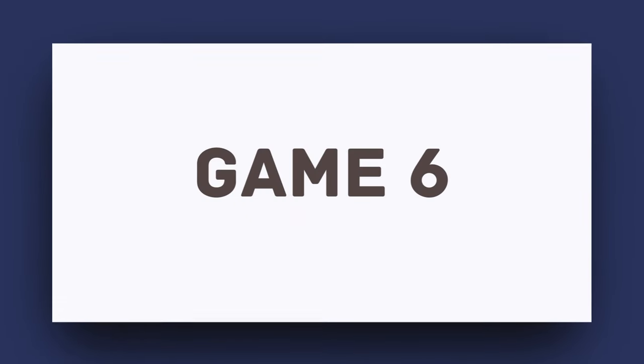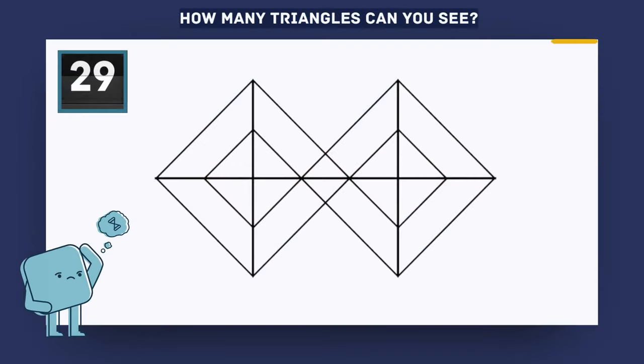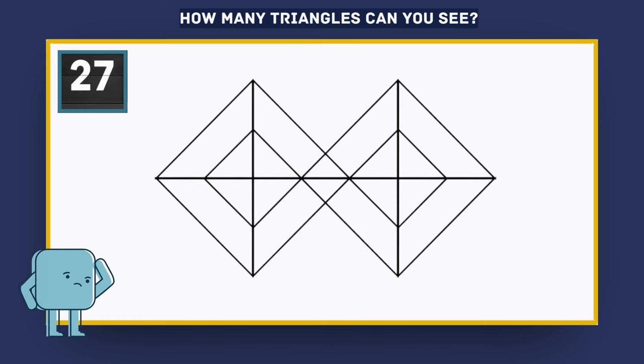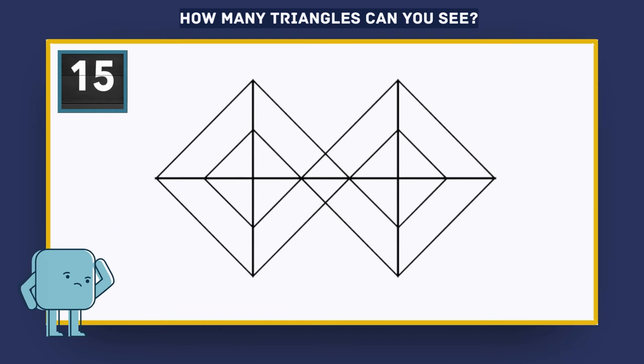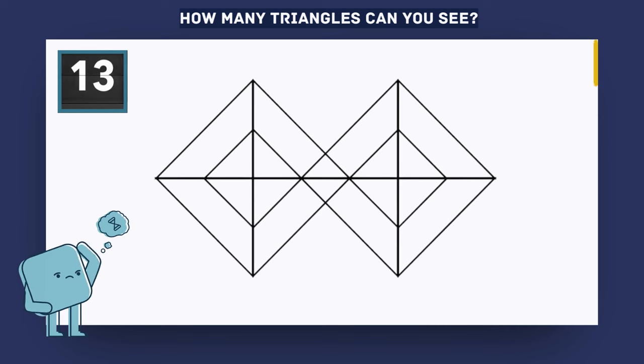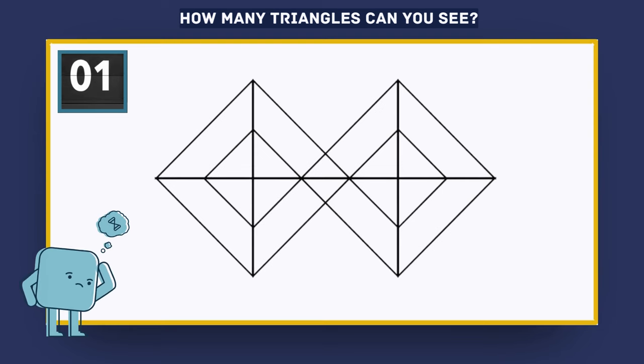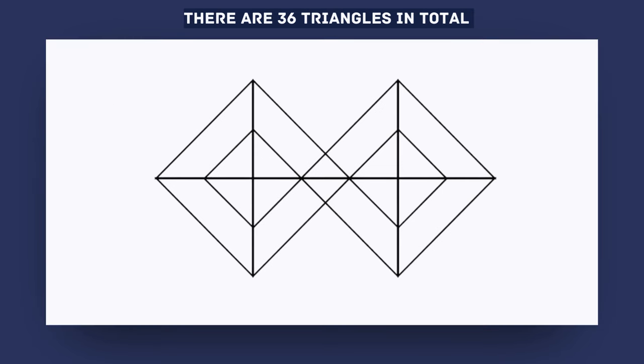Game 6. How many triangles can you see? There are 36 triangles in total.